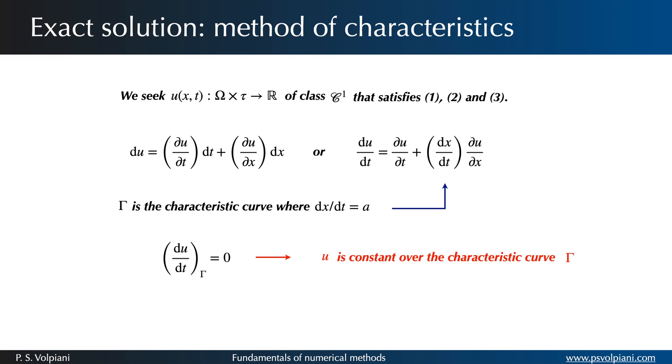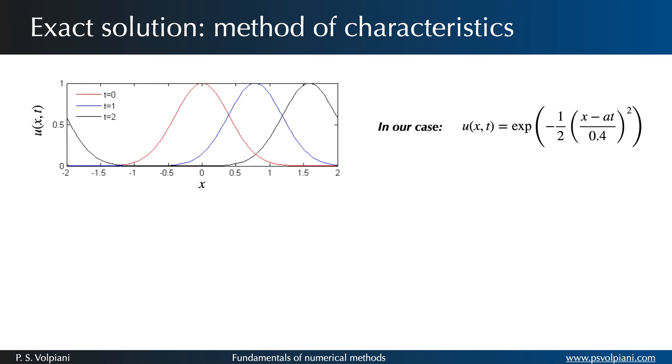This shows that the quantity U is conserved along the characteristic curve gamma and that the solution is of the following form. This equation represents a function which propagates the initial solution at a fixed speed A. In our case the analytical solution reads like this.